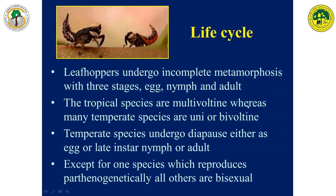The life cycle of leafhoppers is very simple. They have an egg stage, a nymphal stage, and an adult stage. As I mentioned, they are multivoltine, bivoltine, and univoltine. There is only one species which is parthenogenetic; otherwise, they reproduce sexually.